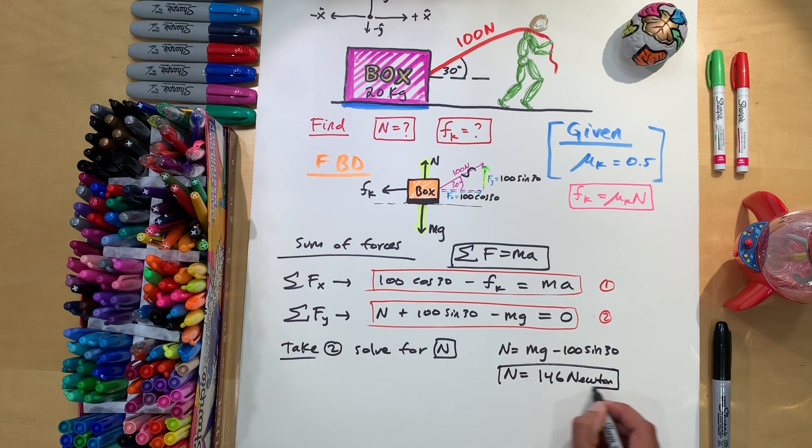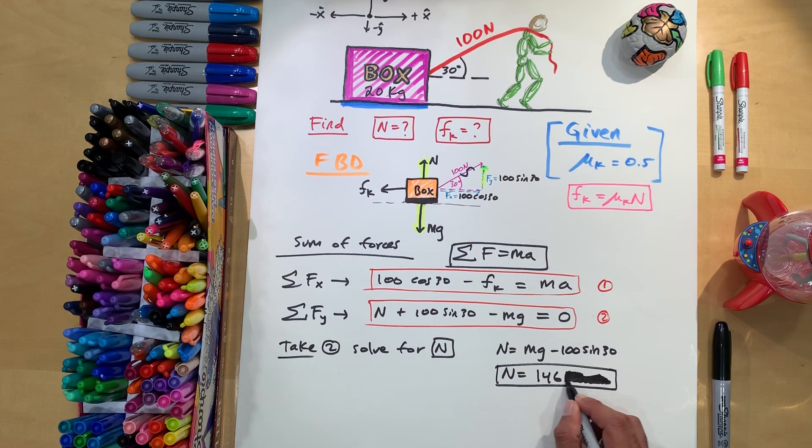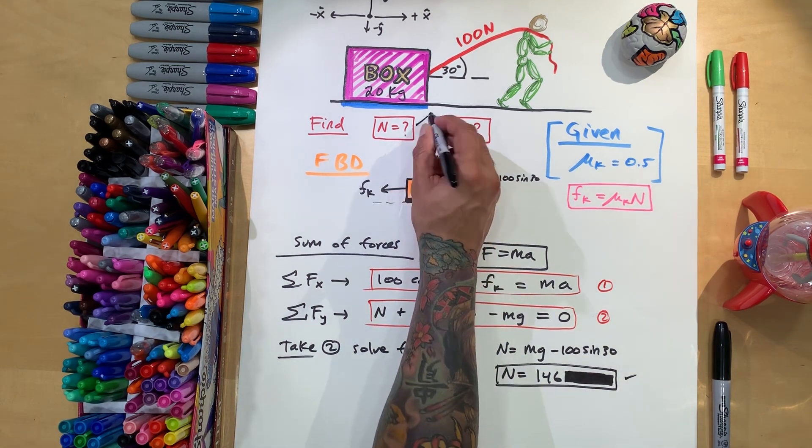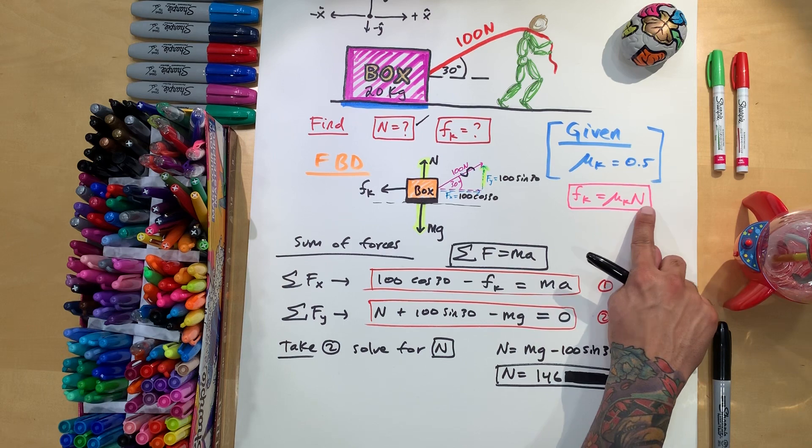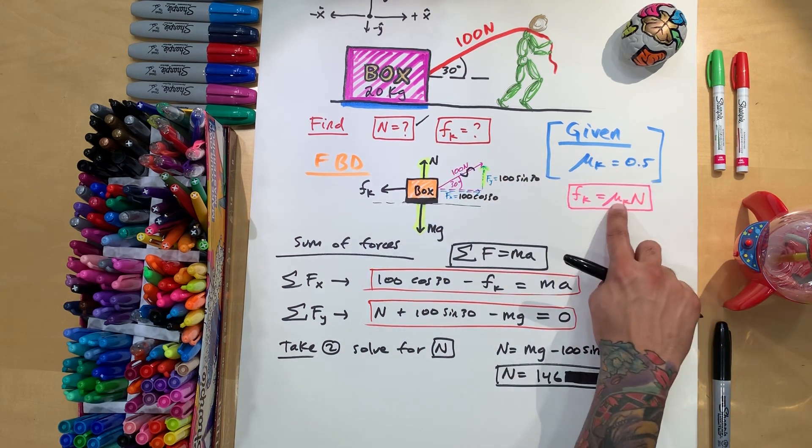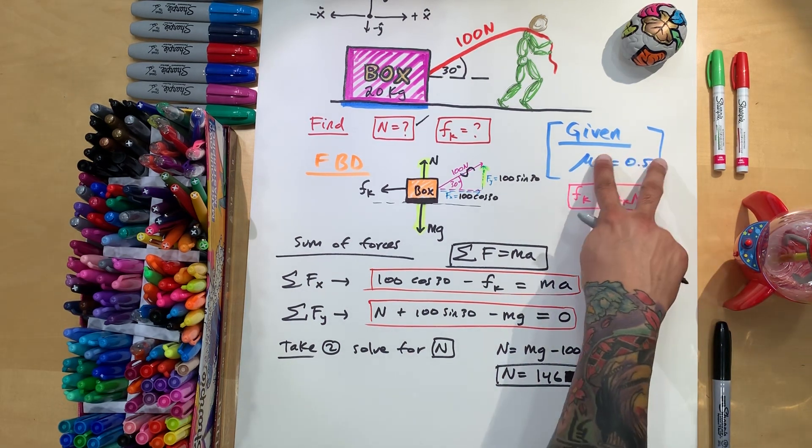So we have there, I'm just going to put 146. I don't want to confuse with units and all that stuff. I haven't been writing units, so I'm not going to write units. I'm just going to put 146. That's the normal. So we got one of the things that we needed. And this is perfect because now the normal is what we need for the friction force, which is what we're being asked to find. And we're already given the coefficient of friction, which is 0.5. And this should always be under one.